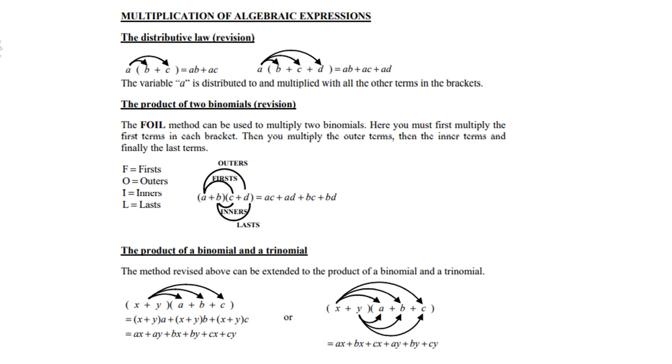The product of a binomial and a trinomial, that means in the first bracket we have two terms, and in the other bracket we have three terms. So here the same thing, so first multiply X with A, then you multiply X with B, and then X with C.